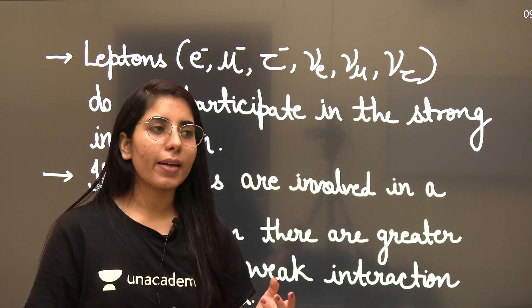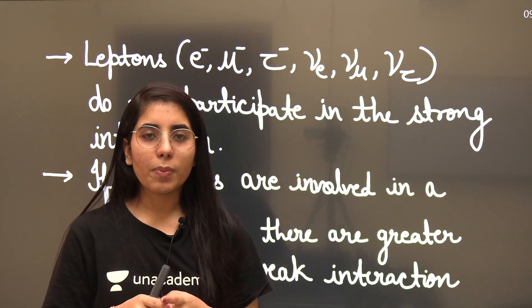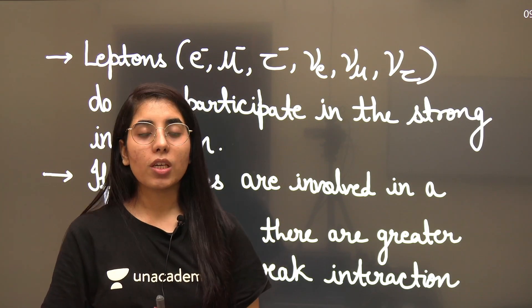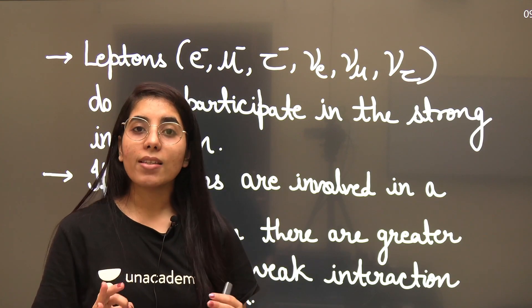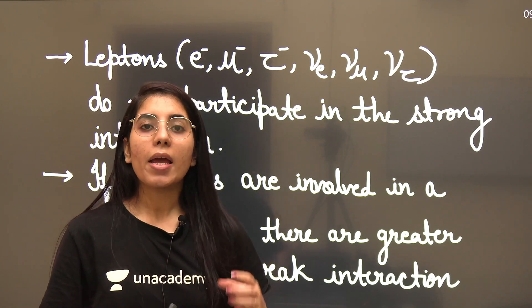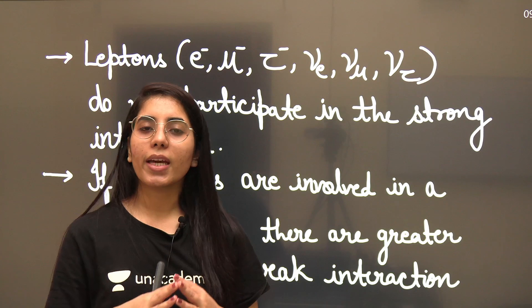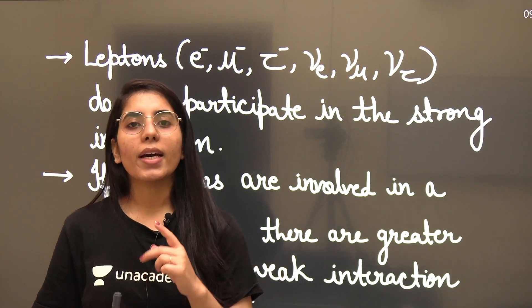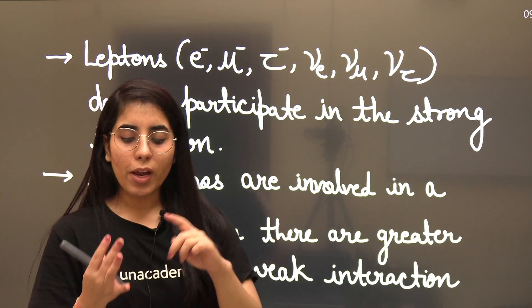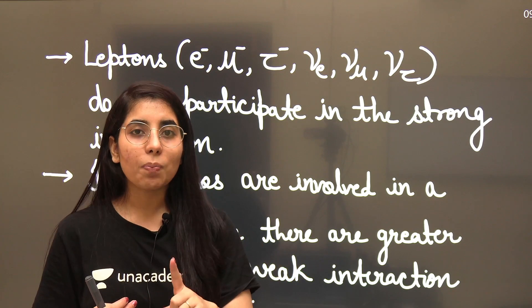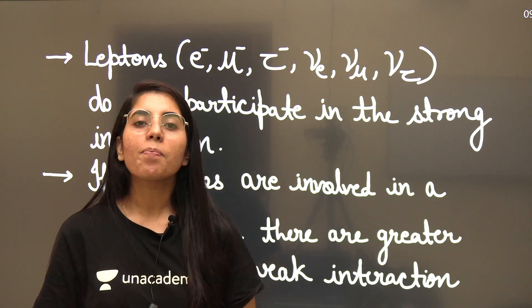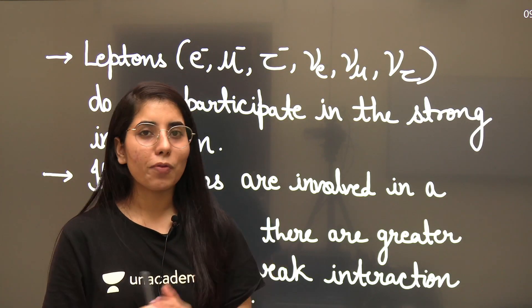Sometimes exam questions ask what kind of interaction is involved in a given reaction. By observing whether leptons are present, you can quickly answer that question. If leptons appear in a reaction, you can eliminate the strong interaction as a possibility and quickly narrow down your options.